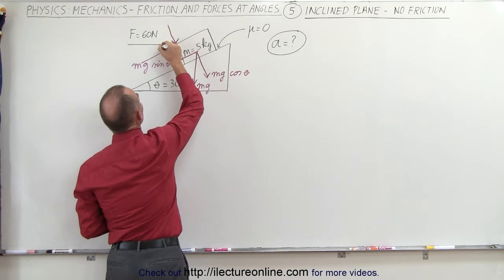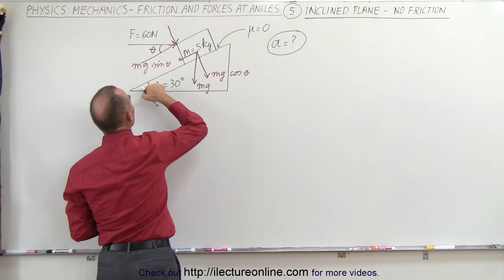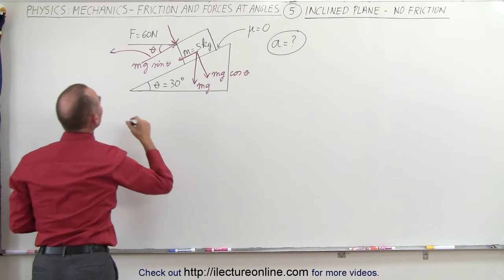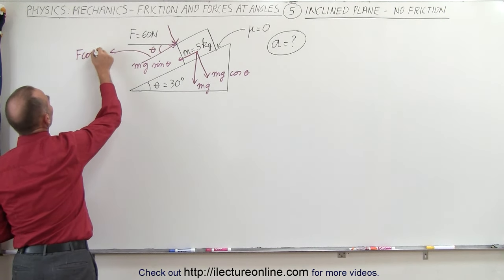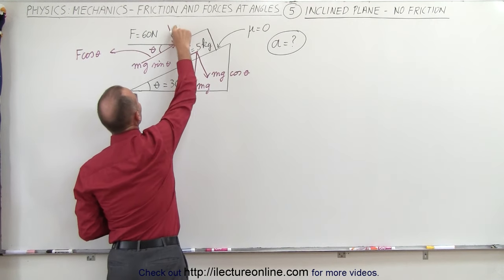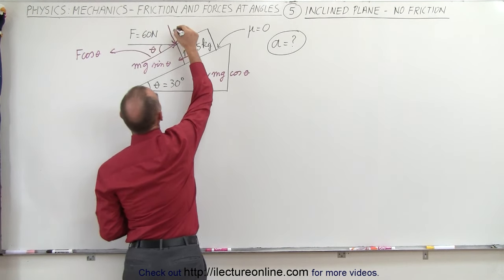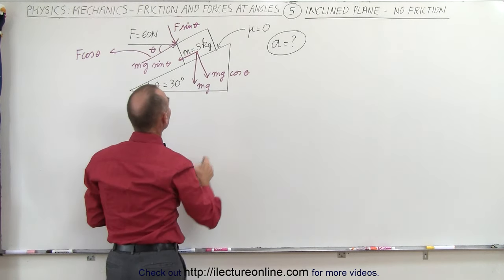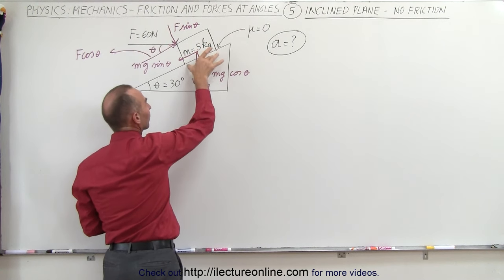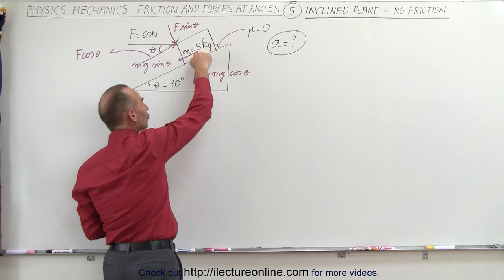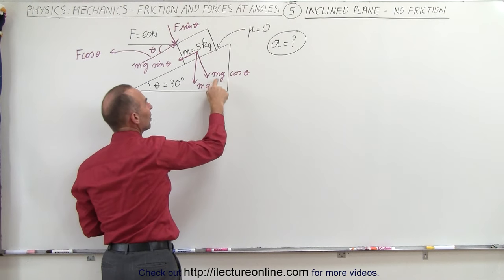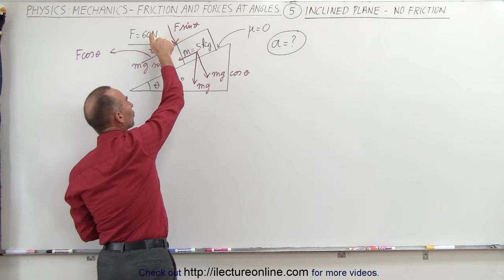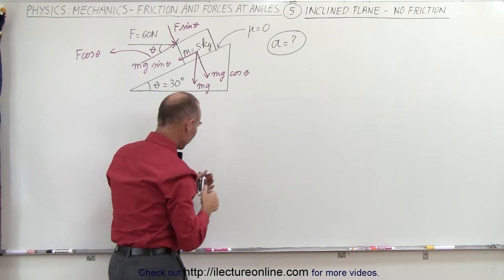If we call this angle theta — which is the same as this angle theta over here — then the adjacent component would be F times the cosine of theta, and the perpendicular component, being opposite to the angle, would be F times the sine of theta. Now if we look at the surface between the block and the plane, there are two forces pushing down on the plane. The first is mg cosine theta, the perpendicular component of the weight, and also this component of the applied force is pushing down on that plane.